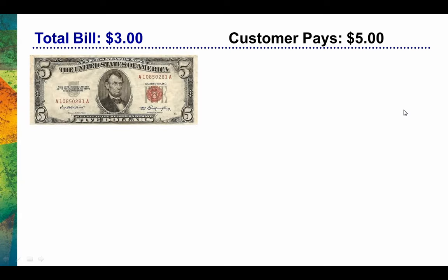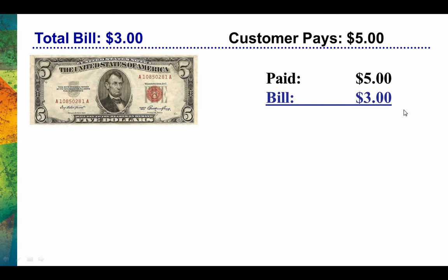Now, of course, it's more typical that a customer won't have exact change. So let's say that the total bill is $3, but the customer has a $5 bill in their pocket. In this particular situation, it's clear that we're going to owe them something because the bill is only $3, but they paid $5. In this situation, we would owe them $2.